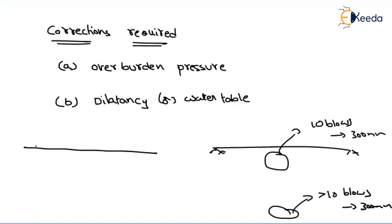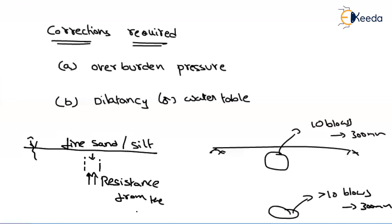The second correction is for dilatancy, also called the water table correction. This is applicable for fine sand or silt. If there is a water table present, when you apply blows you encounter resistance from the water in addition to the sand, which increases the blow count beyond the actual value. So to get the exact value, we apply a correction due to dilatancy or water table. In the next video, we will see how to apply these overburden pressure and dilatancy corrections.